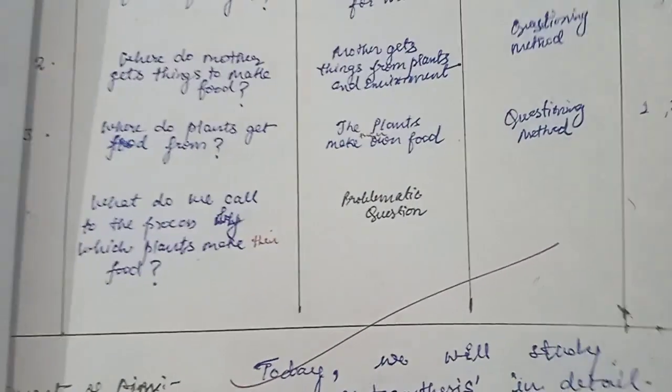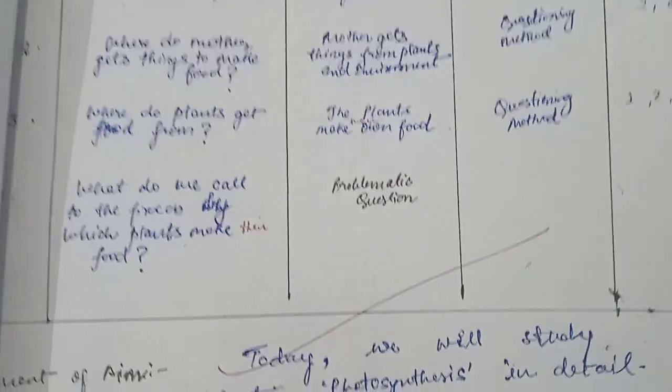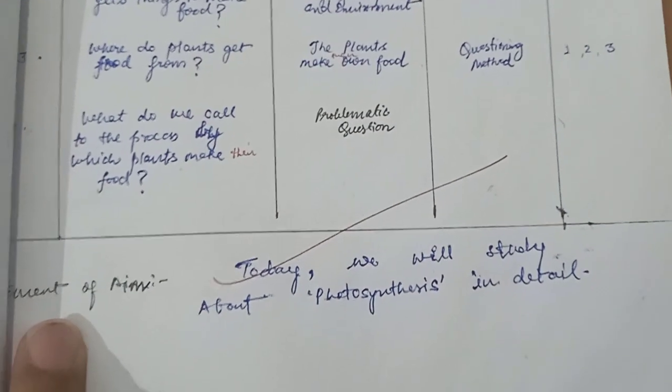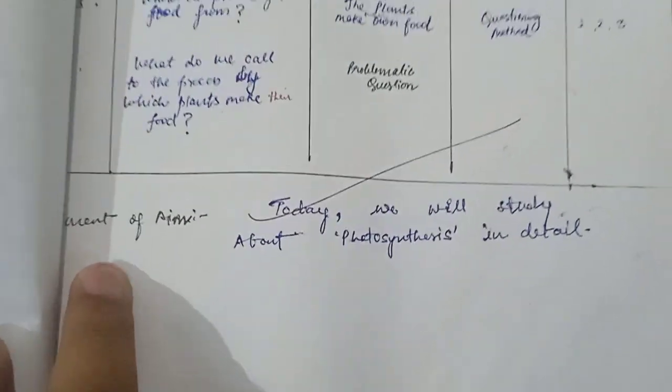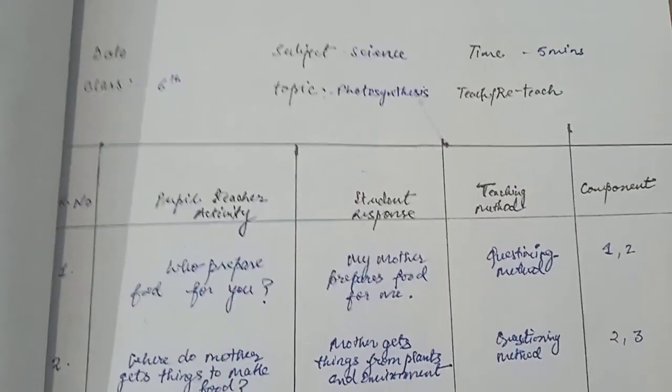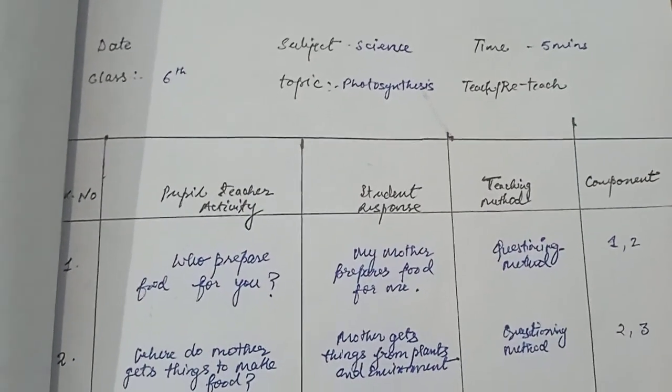The statement of aim will be: today we will study about photosynthesis in detail. As the topic is photosynthesis and a problematic question has been introduced in the class, today we will study about photosynthesis in detail. This is the statement of aim in the introductory skill presentation table.